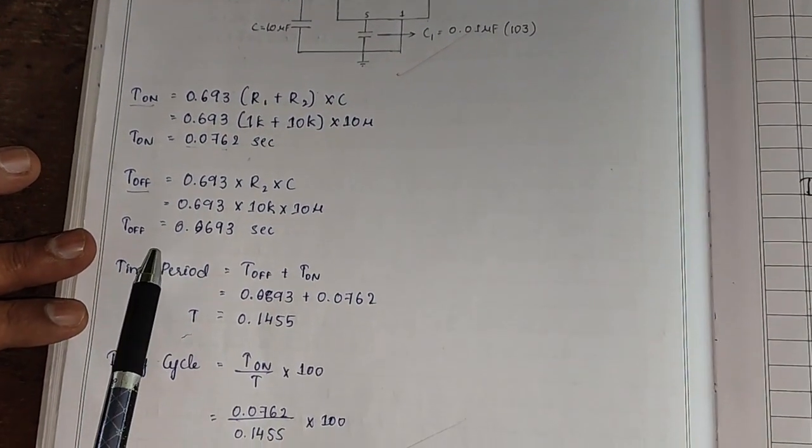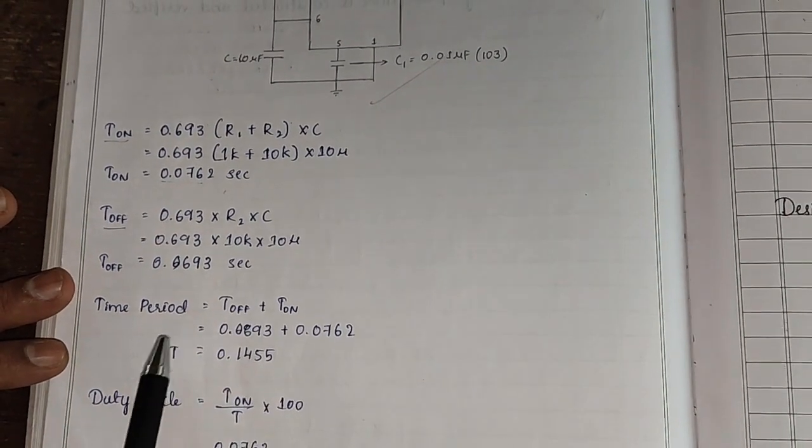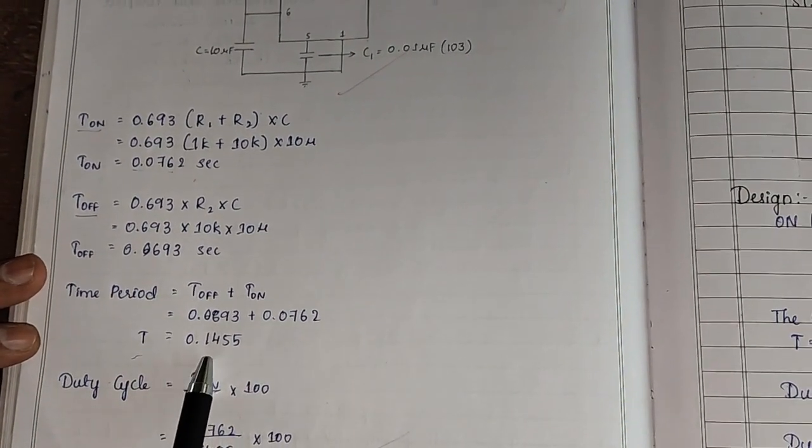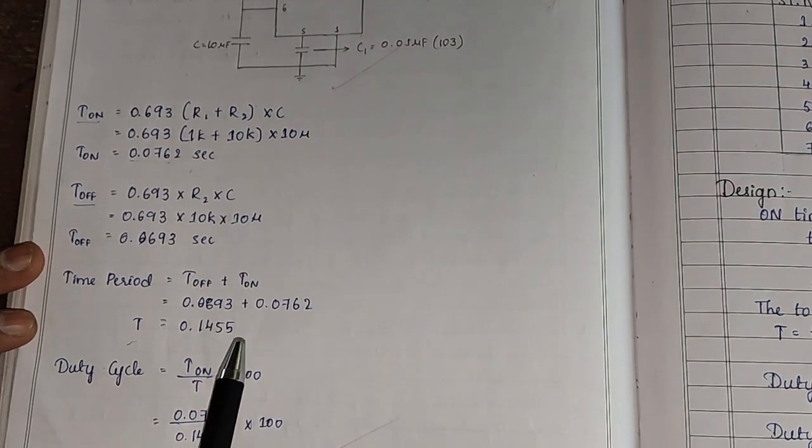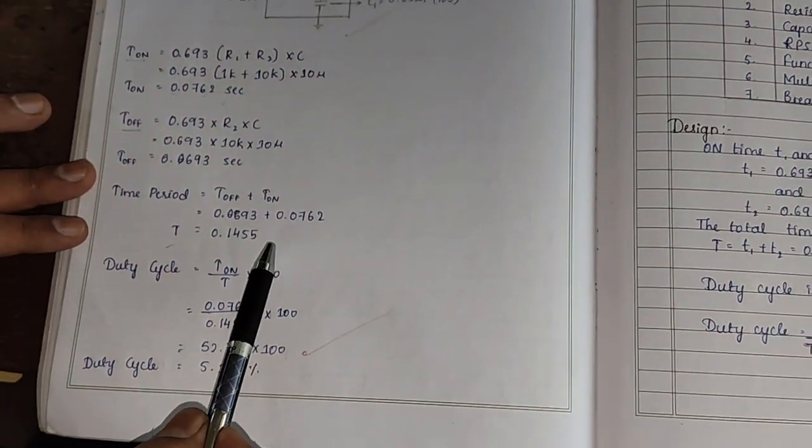Likewise, we have to calculate the value of T off using this given formula. Hence, the total time is 0.145 seconds. That turns out to be almost 14 Hz. Now, let's do this practically.